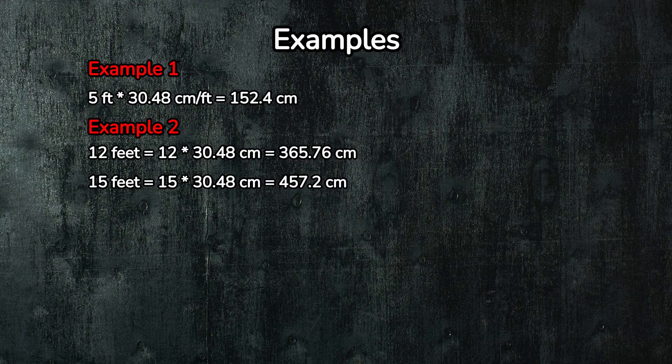Solution. 15 feet equals 15 multiply by 30.48 centimeters equals 457.2 centimeters. 12 feet equals 12 multiply by 30.48 centimeters equals 365.76 centimeters. Thus, the room dimensions are 457.2 centimeters by 365.76 centimeters.